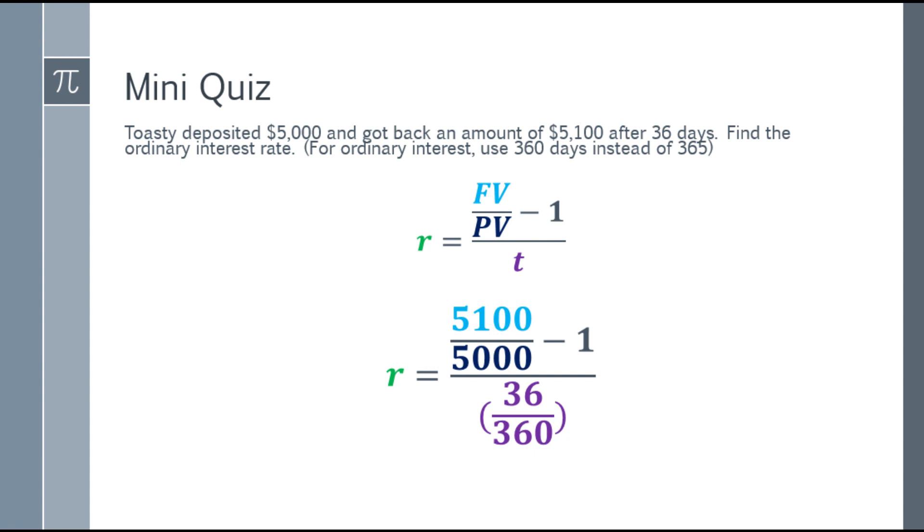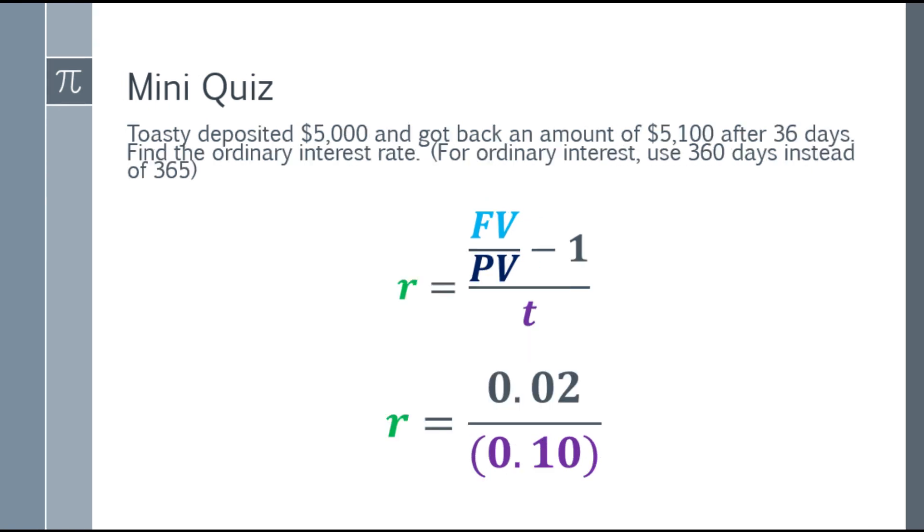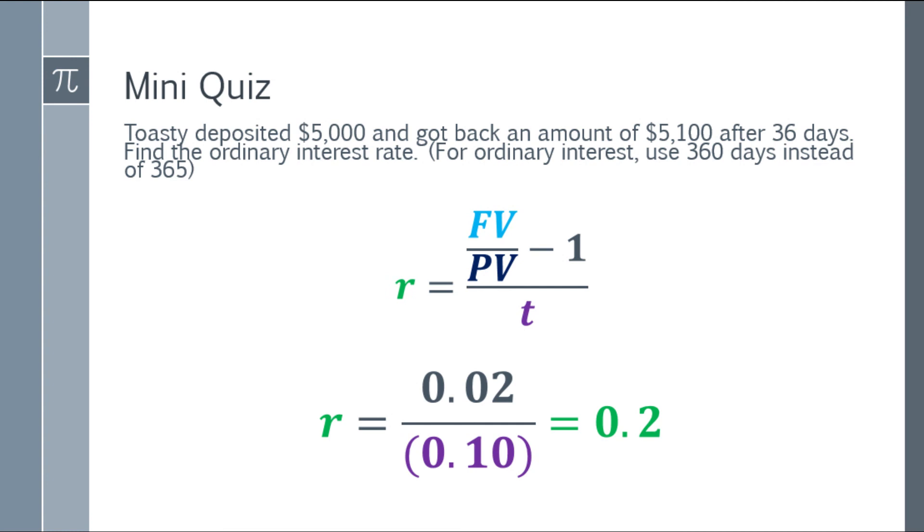Moving on, let's simplify the numerator. 5,100 over 5,000, the answer minus 1, and the answer will be 0.02. Now for the denominator, 36 over 360 is 0.1. So what remains is 0.02 divided by 0.10 or 0.1, and the final answer will be 0.2.